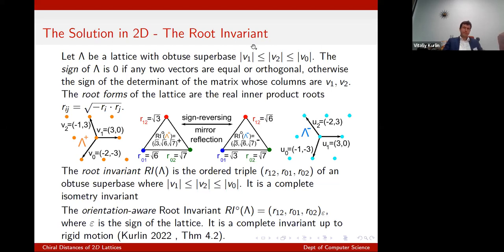We have to decide how to order the vectors of the obtuse superbase and think about what that order means geometrically. We order by length, pick the two shortest vectors, turn them into a 2×2 column matrix, and the sign is the determinant. This distinguishes between two mirror reflections of the same lattice.